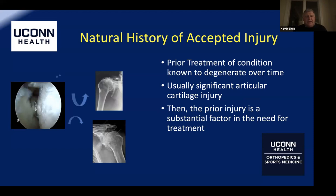Consider a patient who had a scope done 20 years ago where a degenerative head was seen. The patient recovered, went back to work, and then presents with cuff arthropathy or osteoarthritis. In our state, if you had a significant articular cartilage injury in the shoulder — or more often in the knee, a meniscectomy with chondral damage — and you later develop painful arthritis, this is an accepted substantial factor in the need for treatment.